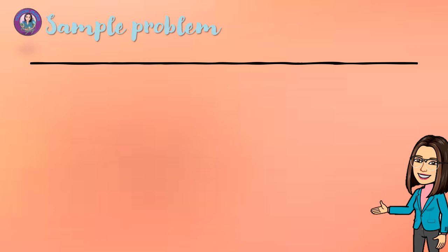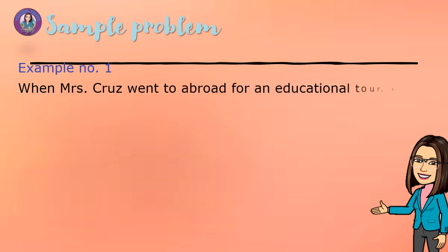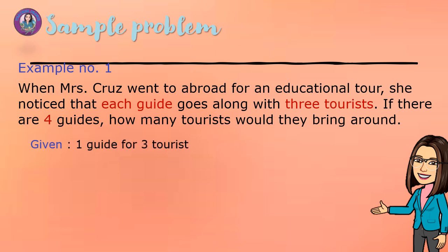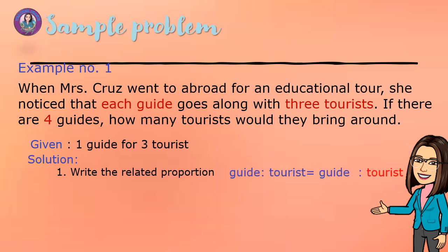Let us have this sample problem. Example number 1: When Mrs. Cruz went abroad for an educational tour, she noticed that each guide goes along with 3 tourists. If there are 4 guides, how many tourists would they bring around? Given: 1 guide for 3 tourists. First, write the related proportion. We have guide to tourist equal to guide to tourist. That is 1 to 3, equal to 4 to N.